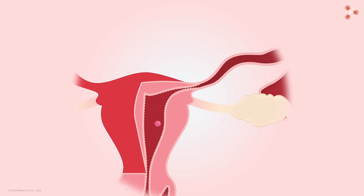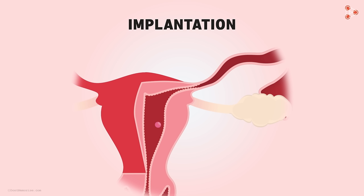This is where the most important stage of implantation comes into the picture. Can we guess what it could be from the name itself? It is the step where the blastocyst now attaches itself inside the mother's body at one fixed position. It implants itself there. And where will this position be? Inside the uterus.